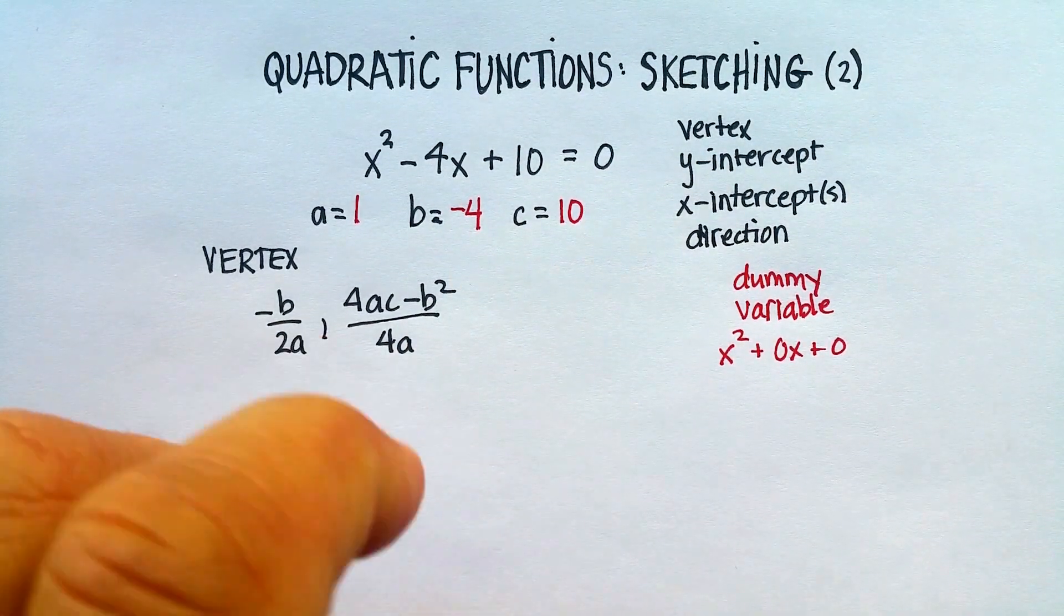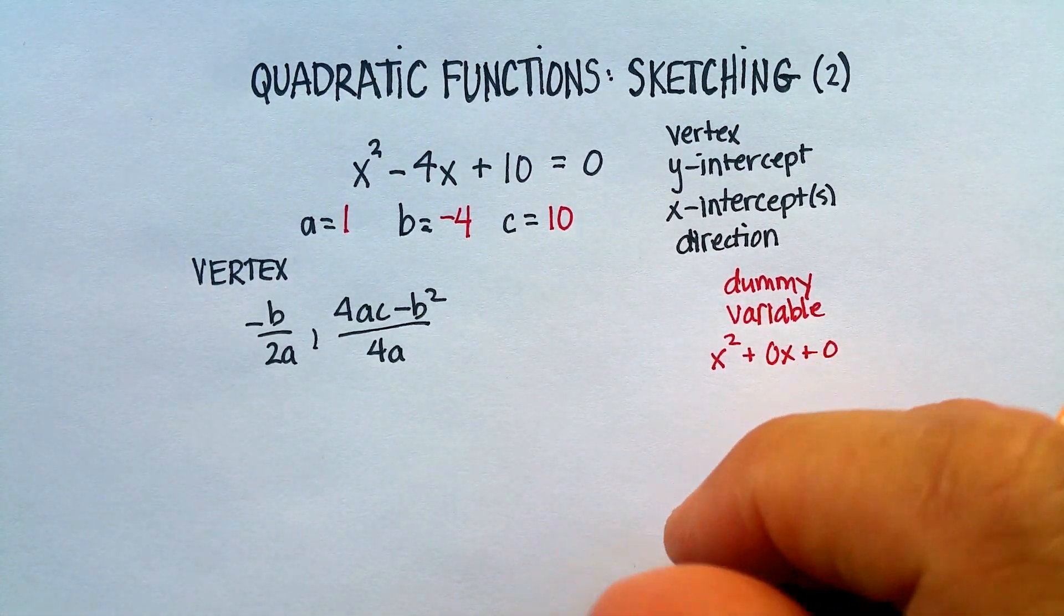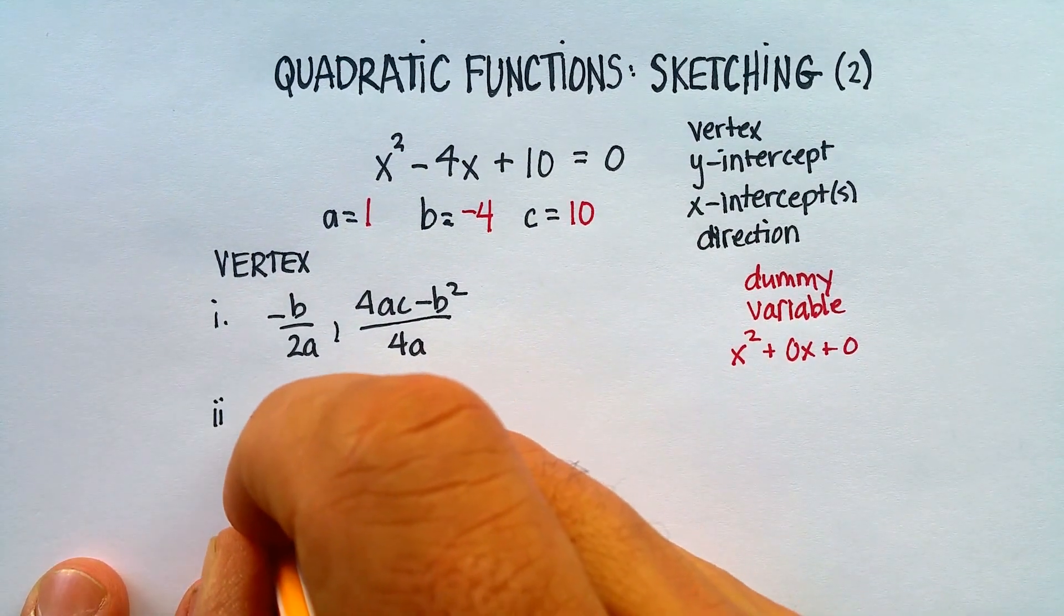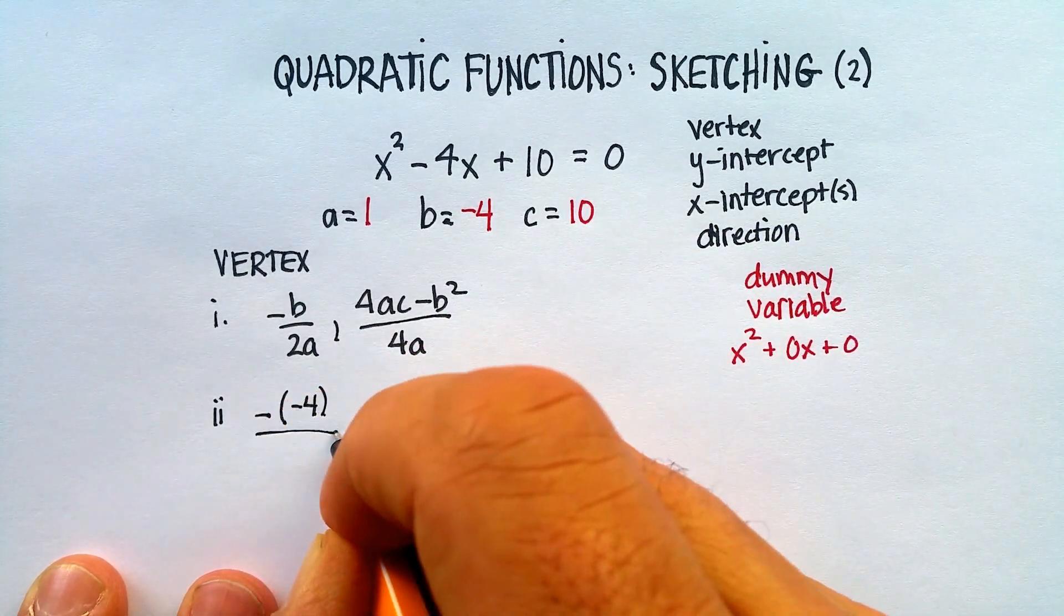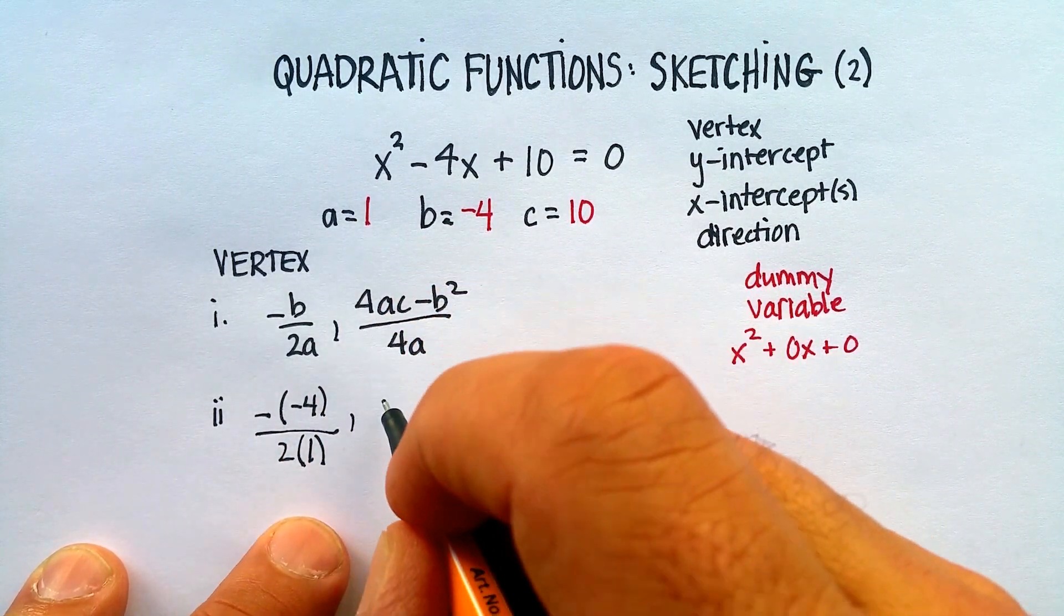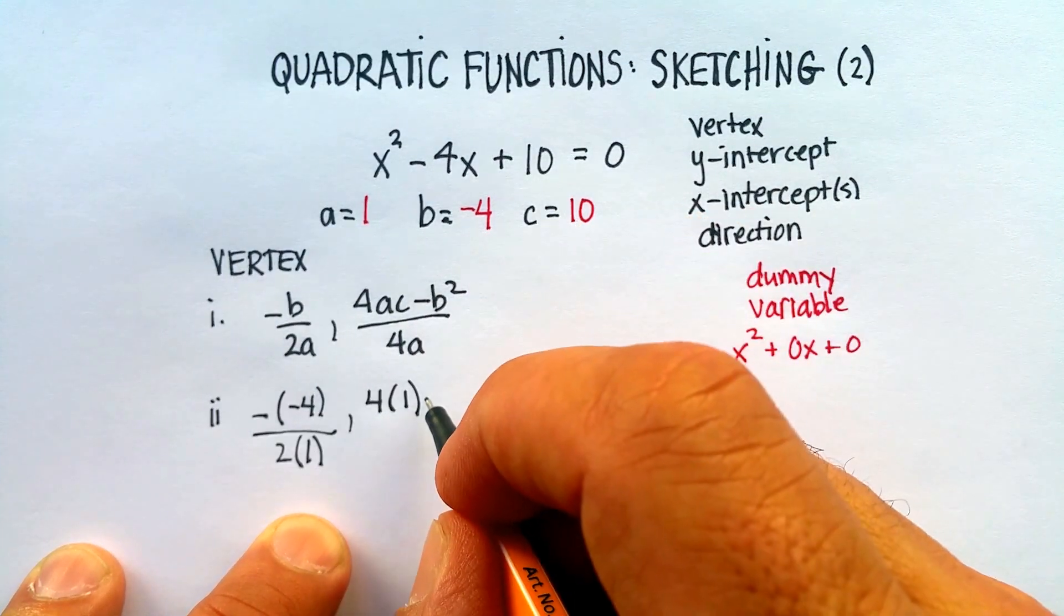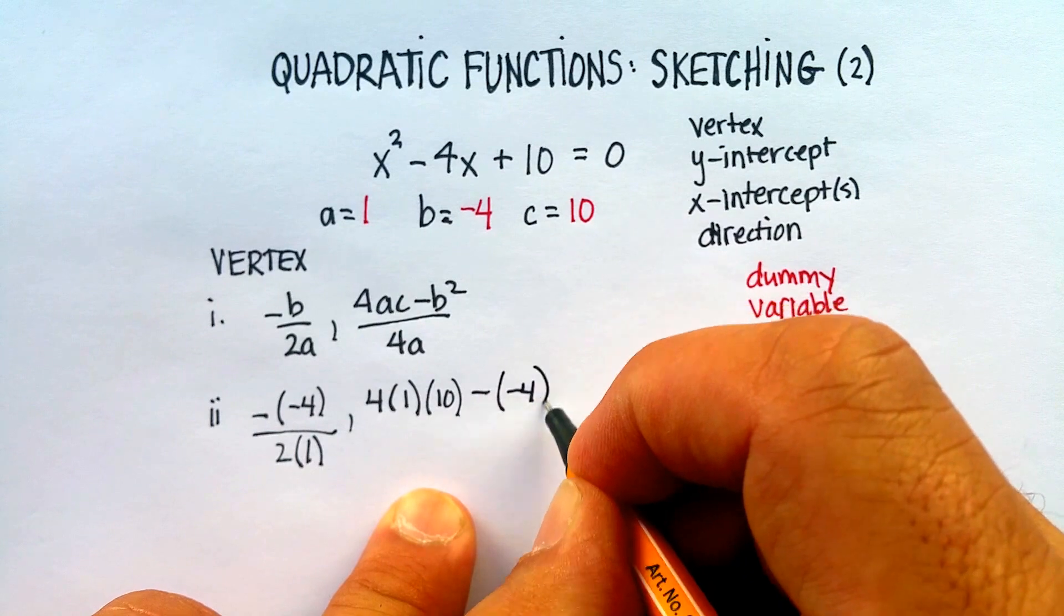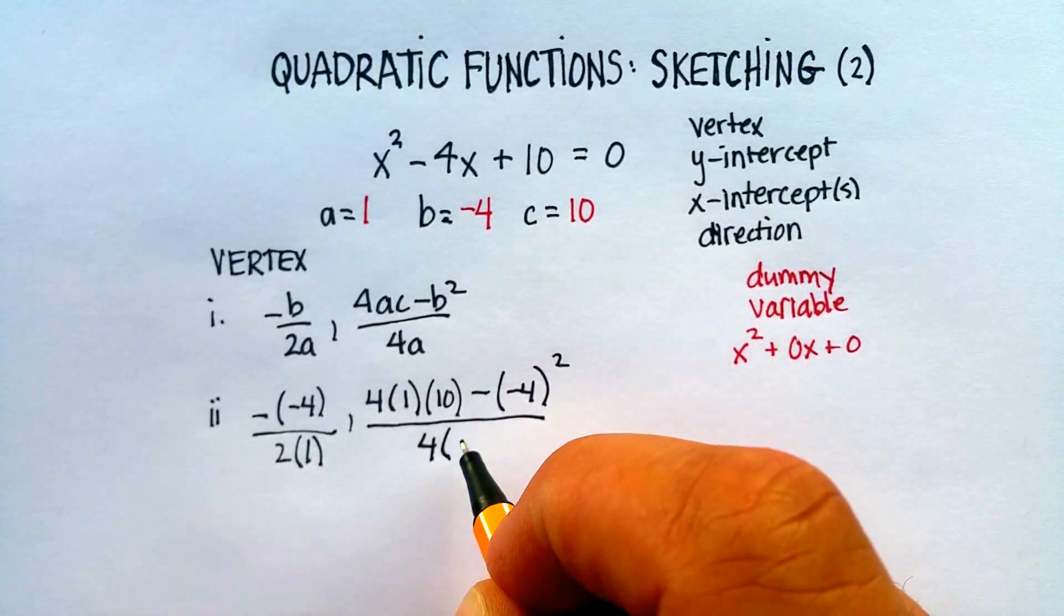Let's go back up and continue on with the vertex. Step 1, identify it. Step 2, negative of negative 4 in parentheses over 2 times 1 in parentheses. And then 4 times a, which is 1, times c, which is 10, minus b squared, so negative 4 quantity squared, all over 4 times a, which is 1. Please put these in parentheses to help with pluses and minuses.